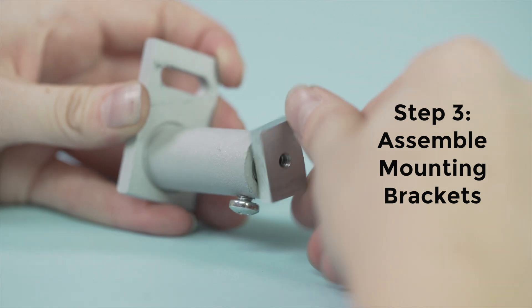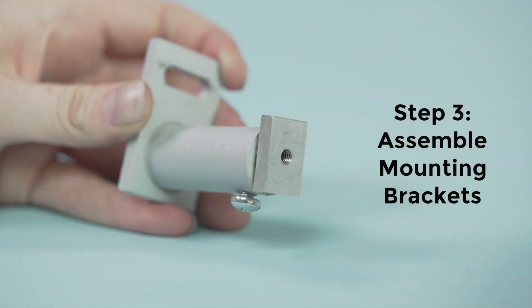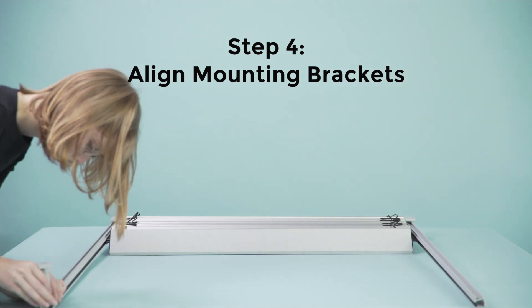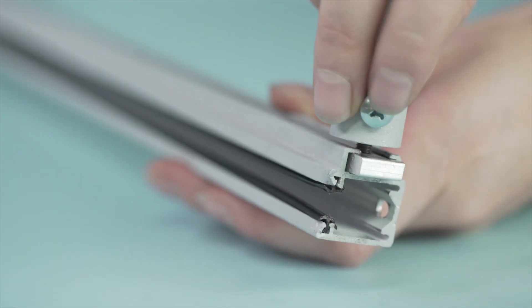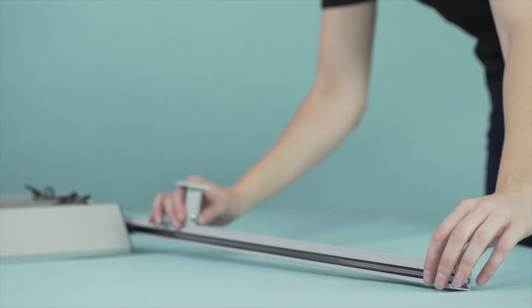Screw the slider into the mounting bracket, making sure that it's still pretty loose. Next, slide the mounting brackets into the crossbar pieces, taking care to make sure they are aligned across from each other.